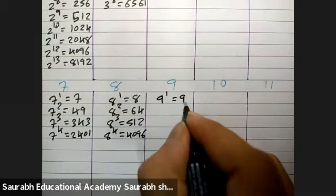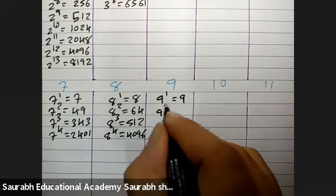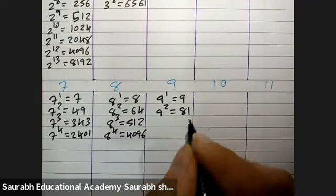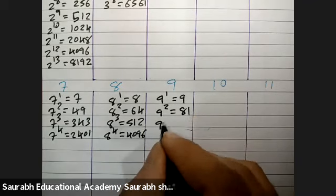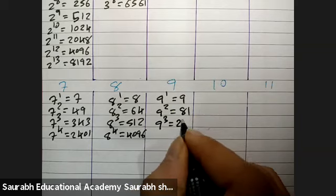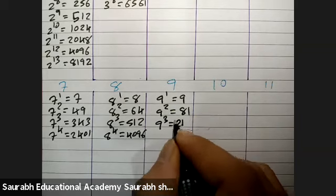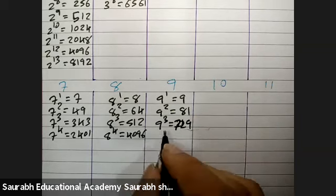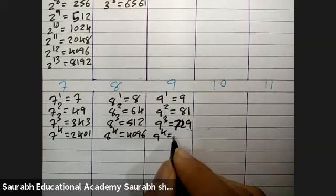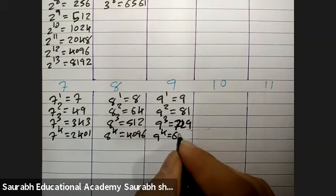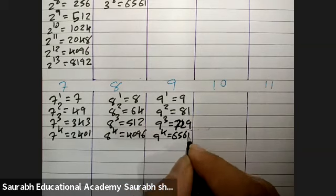9 raise to 1 is 9, 9 raise to 2 is 81, 9 raise to 3 is 729, 9 raise to 4 is 6561.